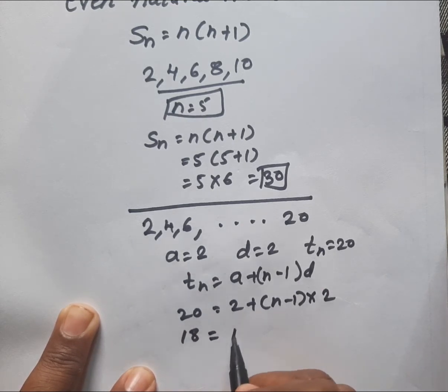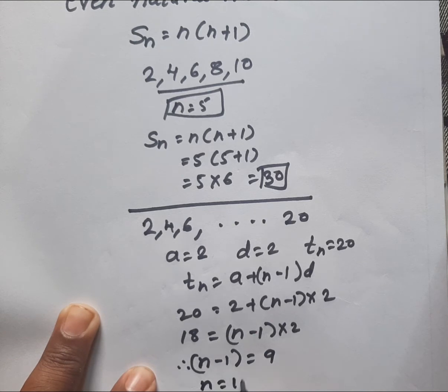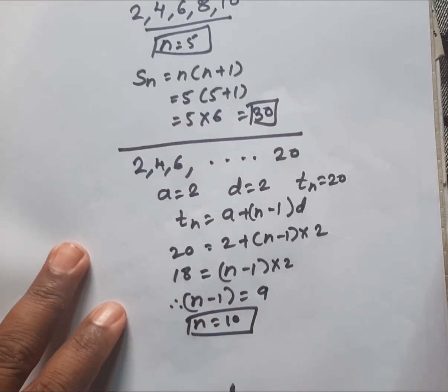Therefore n minus 1 equals 9, so n equals 10. There are 10 even natural numbers from 2 to 20. We will apply the formula Sn equals n bracket n plus 1.